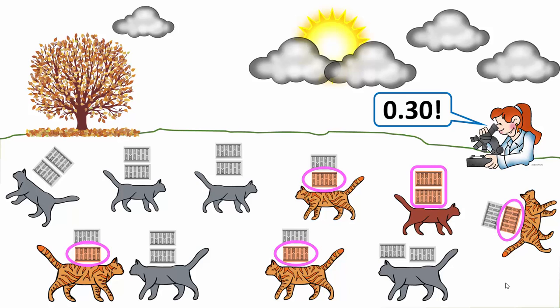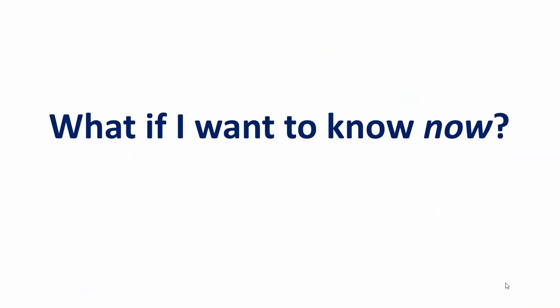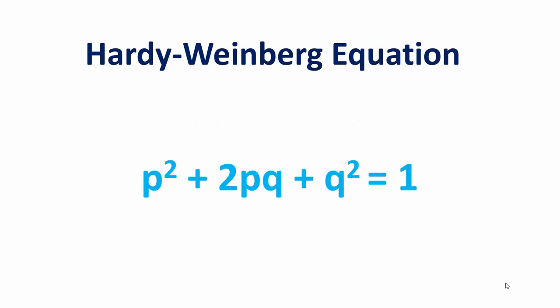Except if you wanted to study something today, because evolution often takes a long time to happen. So what if you want to know about evolution now? Fortunately, we have an equation that can help us with this — it's called the Hardy-Weinberg equation. It says that p² + 2pq + q² = 1, and you might recognize this as the quadratic equation — and in fact, it is the quadratic equation.